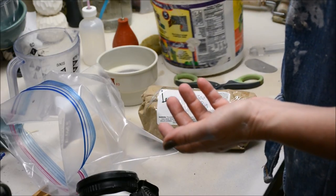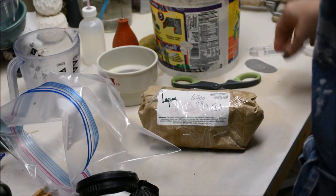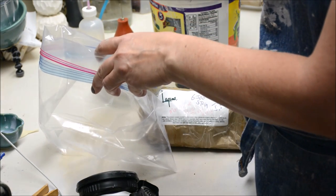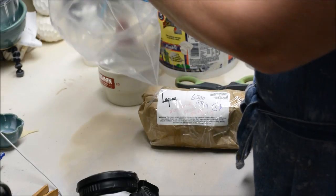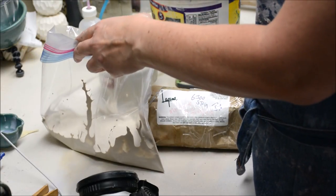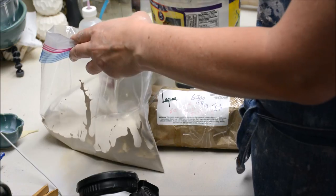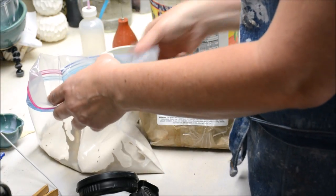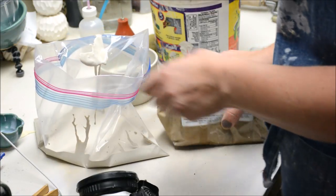You could use a prepared slip if you have a blender or something. You could prepare some slip. I'm going to scoop some of my slip into my Ziploc bag. And then I'm going to be adding some of my mason stain.